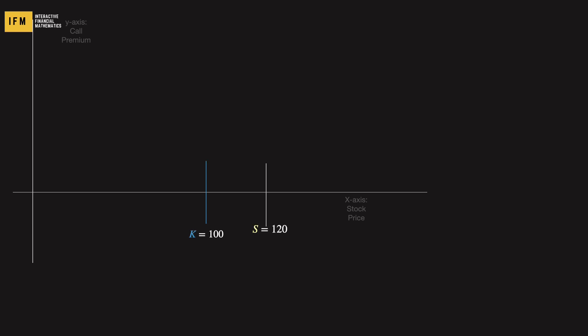To keep it simple, let's consider the payoff at expiry. The payoff is the difference between the stock price and the strike price, also known as the intrinsic value. Calculate the intrinsic value at K equals $100 and S equals $120, and mark a dot representing the call price at this point.